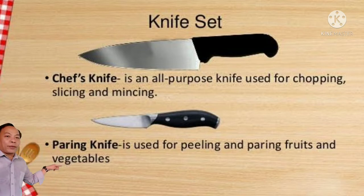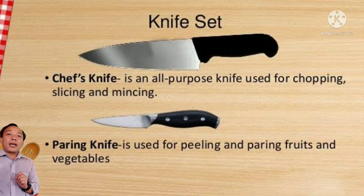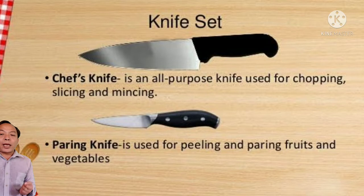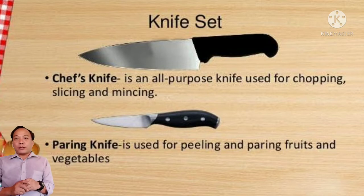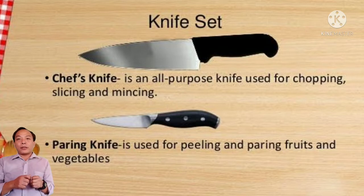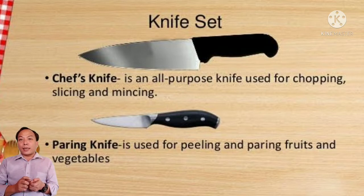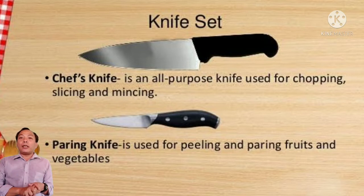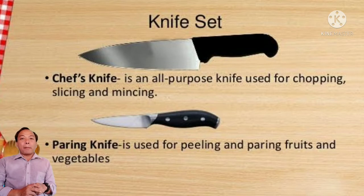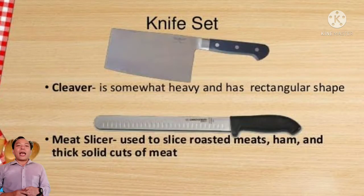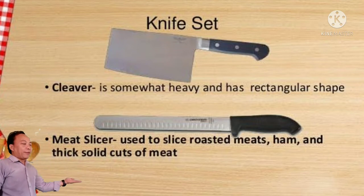Next, after the chef knife, we have the paring knife. The paring knife is used for peeling fruits and vegetables — it is used to remove the skin of vegetables and fruits.